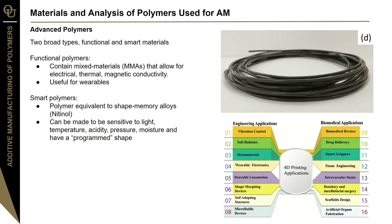There are also advanced functional and smart polymer types. You can have additives in your polymers that make them more applicable to specific situations. Some polymers behave equivalently to shape memory alloys — you print them a certain way and they bounce back at a later time once applied. They can also be sensitive to light, temperature, or acidity, making them very usable in sensor-type applications. In a sense, they can be programmable to a specific shape.